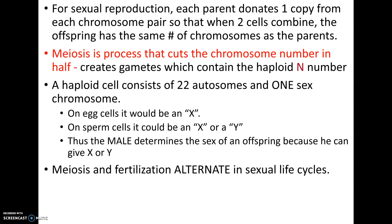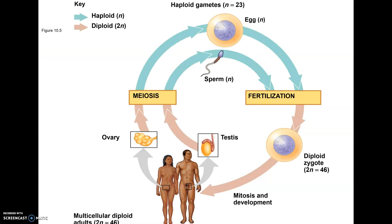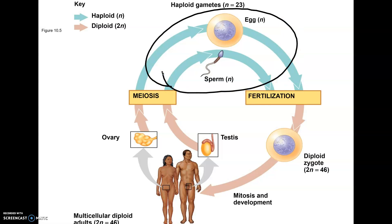Meiosis and fertilization alternate in all sexual life cycles. Any organism that reproduces sexually will have meiosis occur at some point to cut the chromosome number in half, and then fertilization will occur at some point where two cells fuse to restore the diploid number. In humans, the only haploid cells are sex cells — sperm and egg — and when fertilization happens, the resulting zygote undergoes only mitosis and cell differentiation to grow into an adult.